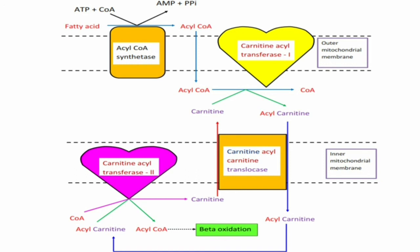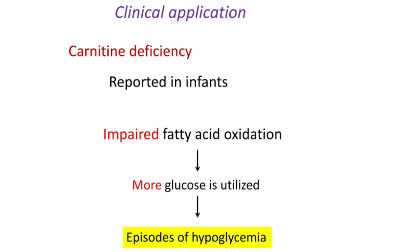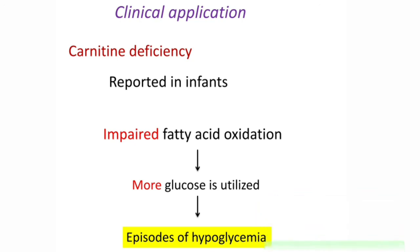Coming to clinical applications: the first condition is carnitine deficiency, mainly reported in infants. There is impaired fatty acid oxidation because fatty acids cannot be moved from the cytosol to the mitochondria. As a result, energy cannot be extracted from fatty acids, so more glucose is utilized. This is the reason for episodes of hypoglycemia seen in carnitine deficiency.